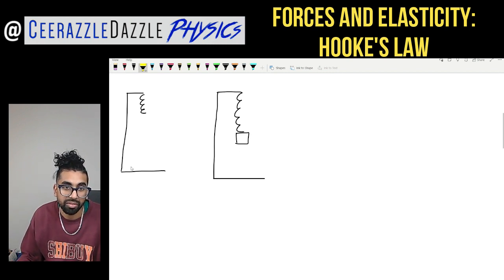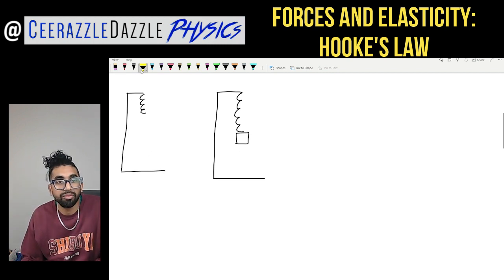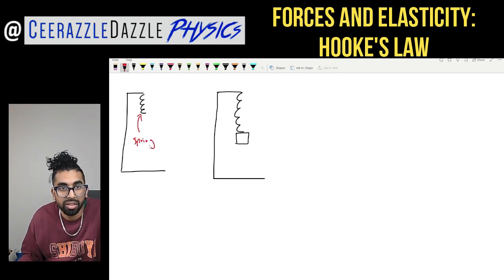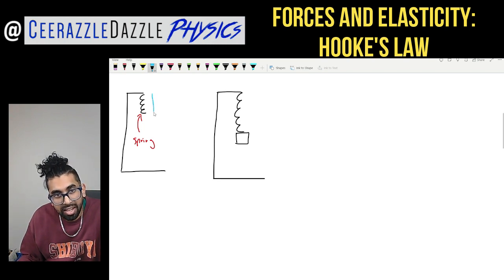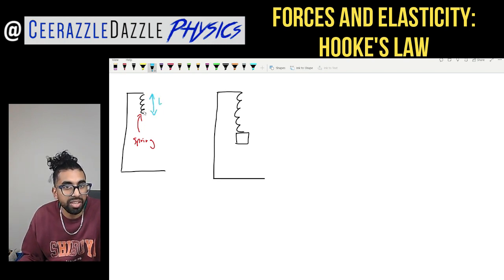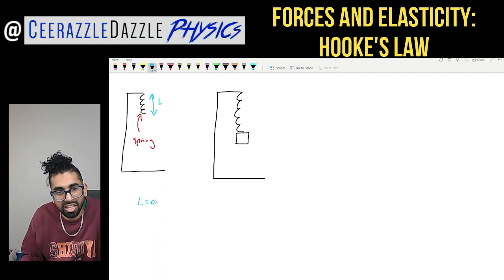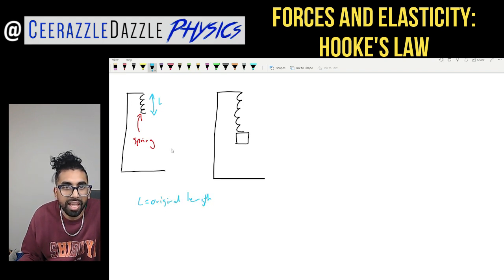Over here I've got a clamp stand — hopefully you see these at school — and I've got a spring attached to it. Now let's label the original length. With nothing attached to the spring, this is the original length, which we'll call lowercase l.